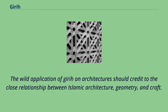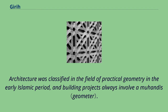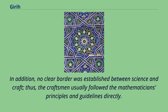The wide application of girih on architecture should credit the close relationship between Islamic architecture, geometry, and craft. Architecture was classified in the field of practical geometry in the early Islamic period, and building projects always involved a muhandis. No clear border was established between science and craft; thus, craftsmen usually followed the mathematician's principles and guidelines directly.